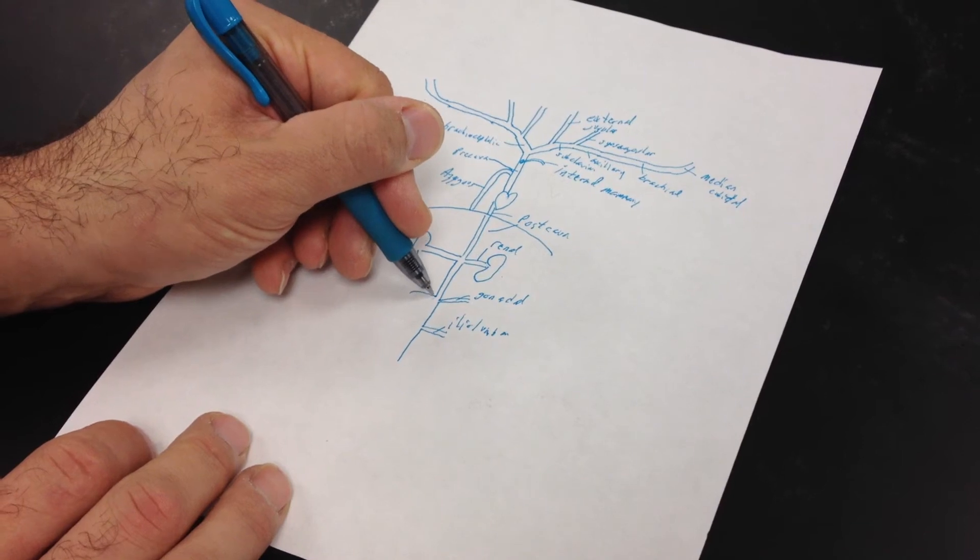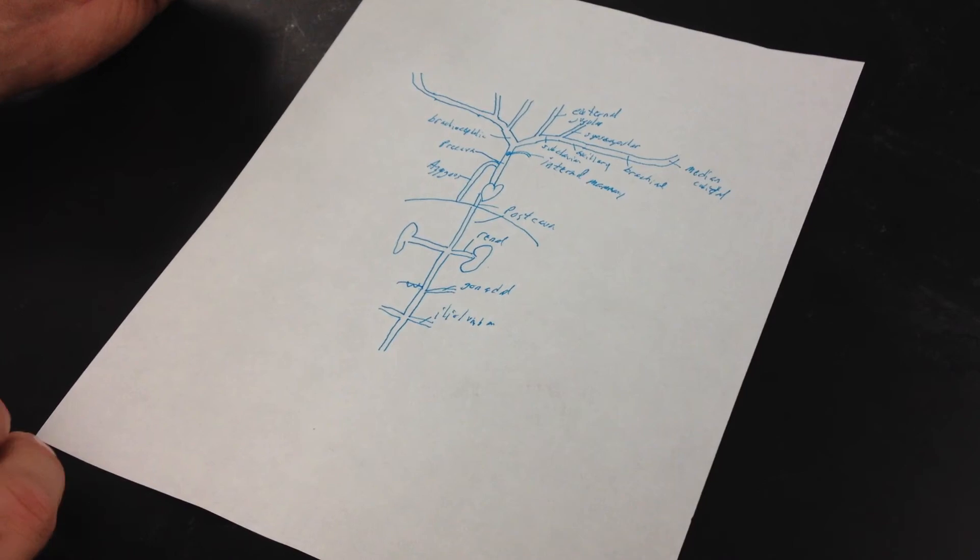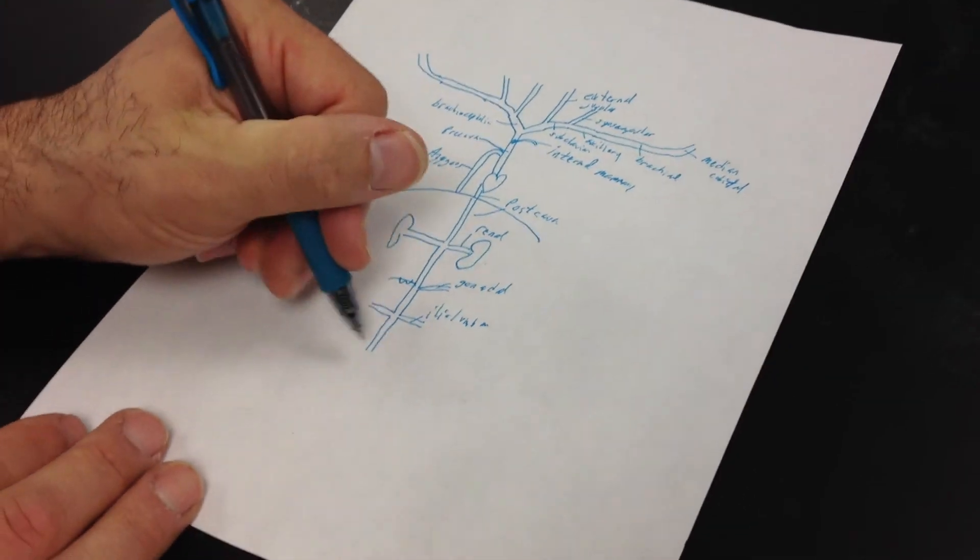So what I want to do next, or that doesn't go across there, sorry. This one does. So what I want to look at next is I want to look at where the postcava is going to branch.